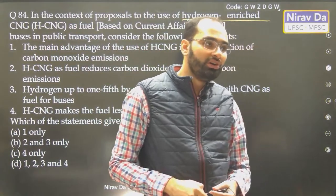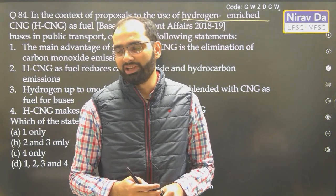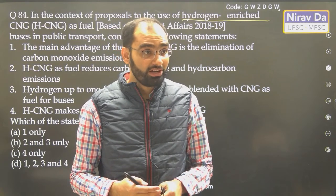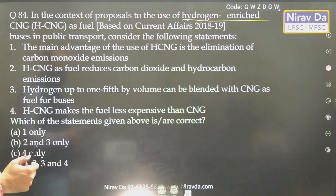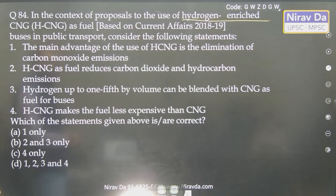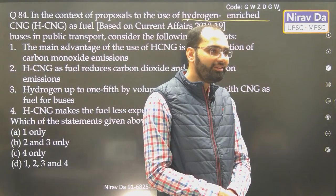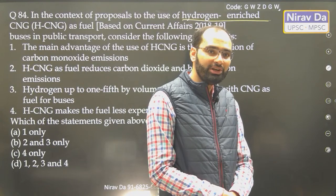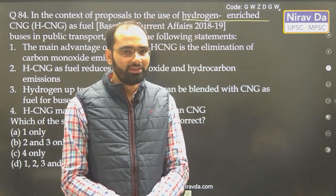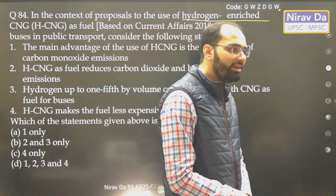The main advantage of the use of hydrogen-enriched CNG is the elimination of carbon monoxide emissions — is this right or wrong? It looks right because hydrogen is a clean fuel. But CNG is still there, and has it been completely eliminated? That is an absolute statement. When there is still CNG, there will be some incomplete combustion. So this is an extreme/absolute statement — eliminate it. Statement 2 says 'reduces' — check what it is saying directly. It reduces carbon dioxide and hydrocarbon emissions — this looks correct.